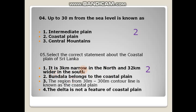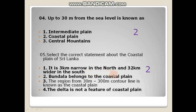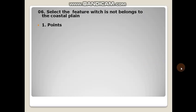The first option — it is 3 km narrow in the north and 32 km wide in the south — is wrong because it is actually 30 km narrow in the south and 32 km wide in the north. The region from 30 metres to 300 metres is the intermediate plain, not the coastal plain. And the delta is actually a feature of the coastal plain.